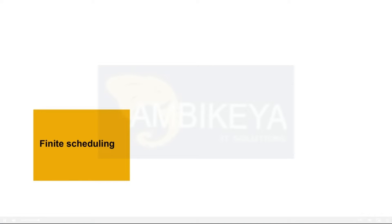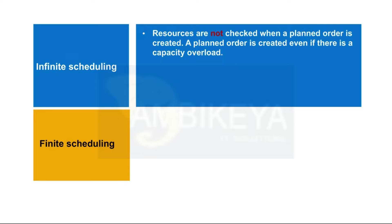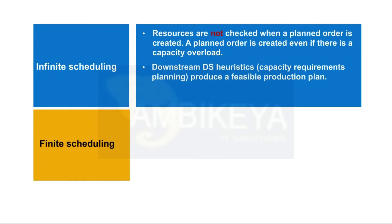Production planning in PPDS can be executed as planning with finite or infinite scheduling. Capacities are not checked in production planning with infinite scheduling. Planned orders are created on time regardless of the capacity load. Capacity planning takes place in a second step, using special DS heuristics. Finally, planning can be enhanced using optimization.